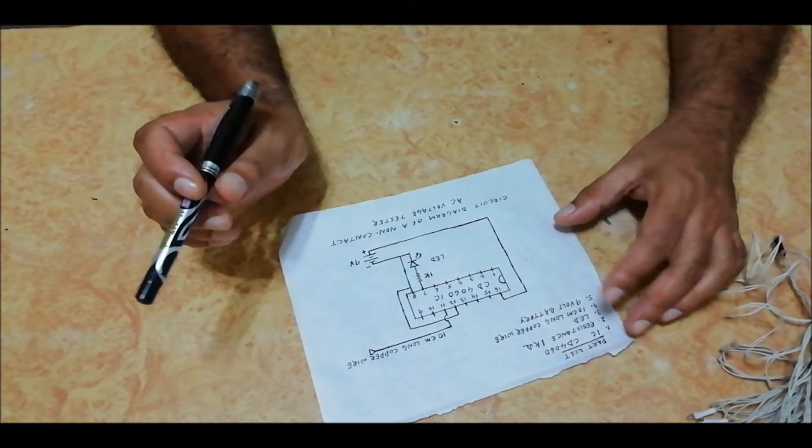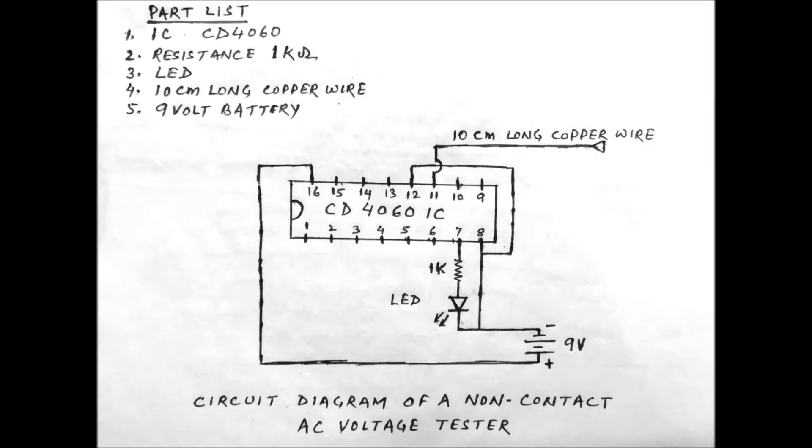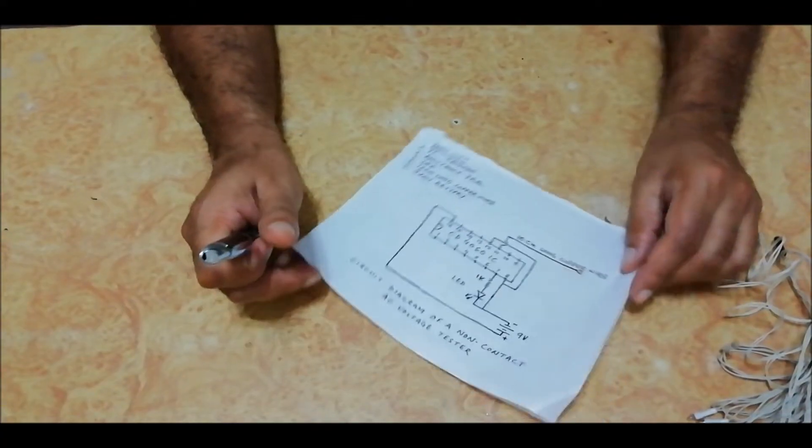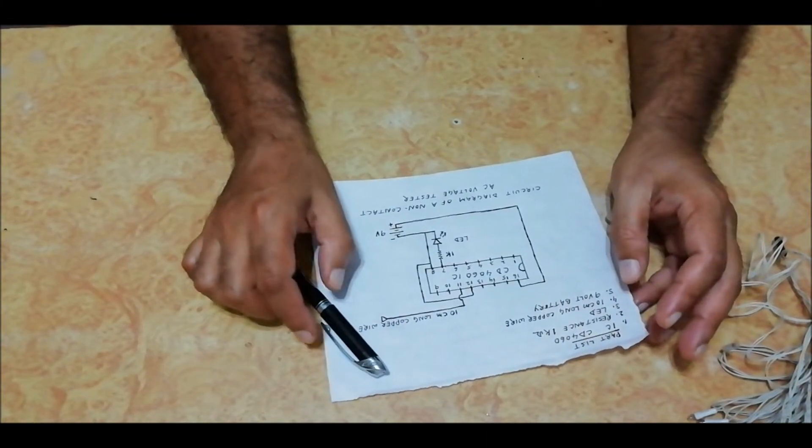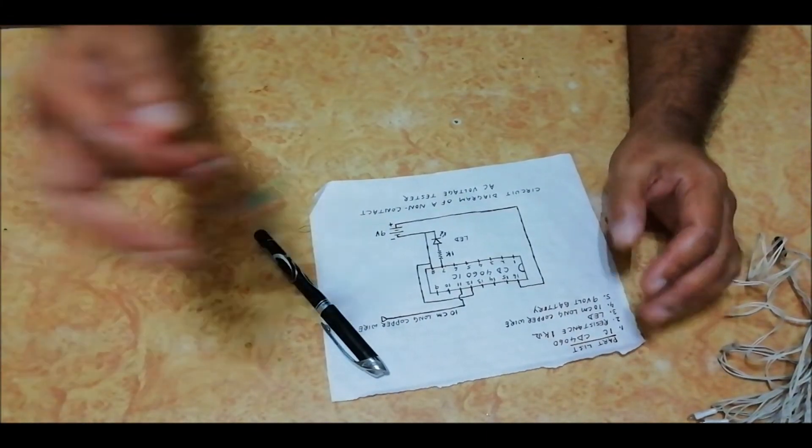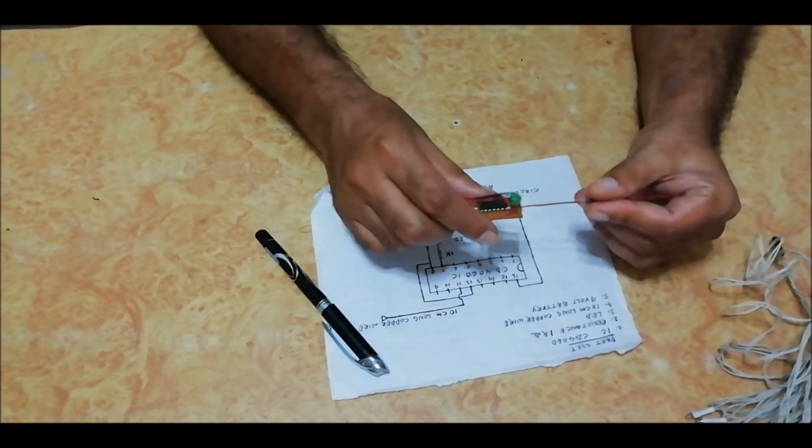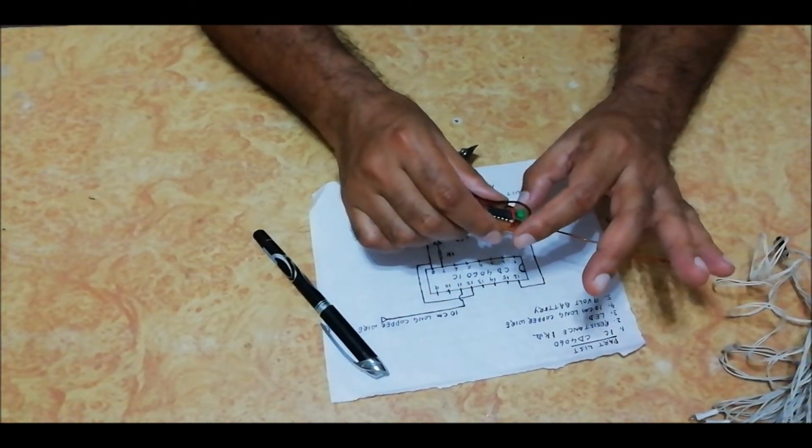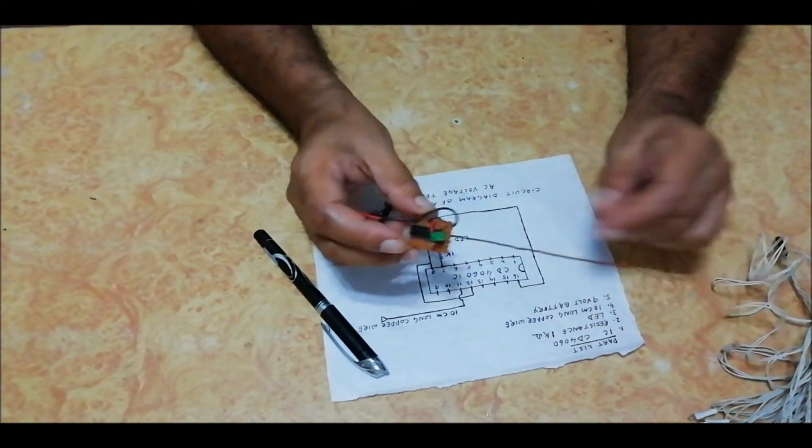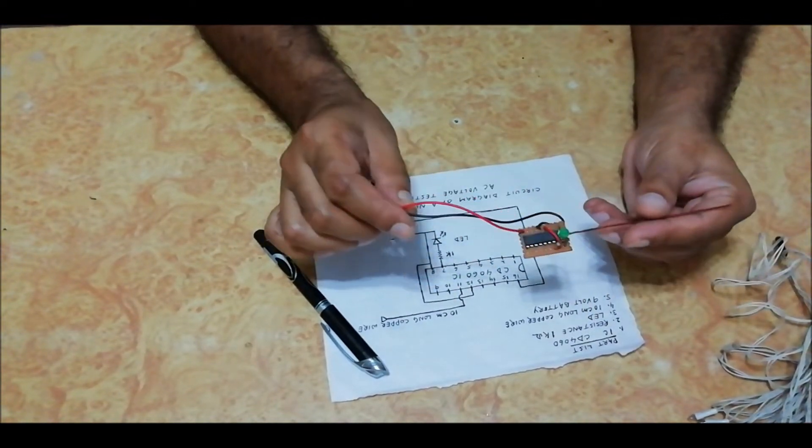So we can assemble all these components on a general purpose PCB board like this. This is the antenna, 10 centimeter long, this LED, one resistance, and this is IC. So let us check the working of this non-contact AC voltage tester.